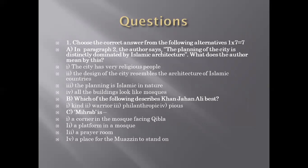For question number one, choose the correct answer from the following alternatives. Four alternatives will be given and you have to choose the best one. There will be seven questions and you are supposed to get seven marks from this question. First question — in paragraph two, the author says 'the planning of the city is distinctly dominated by Islamic architecture.' What does the author mean? Options: the city has very religious people; the design of the city resembles the architecture of Islamic countries; the planning is Islamic in nature; all the buildings look like mosques.